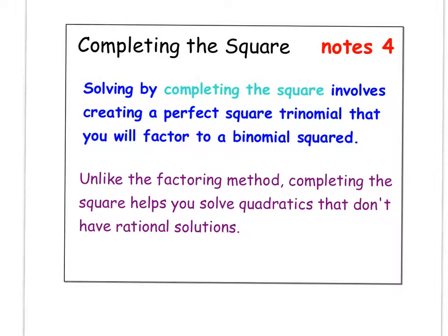Unlike the factoring method, completing the square helps you solve quadratics that don't have rational solutions. So a rational solution, remember, would be a whole number or a fraction. So how does that work?